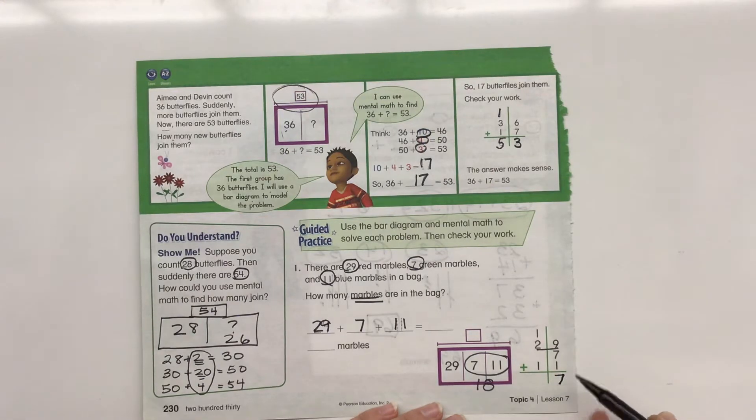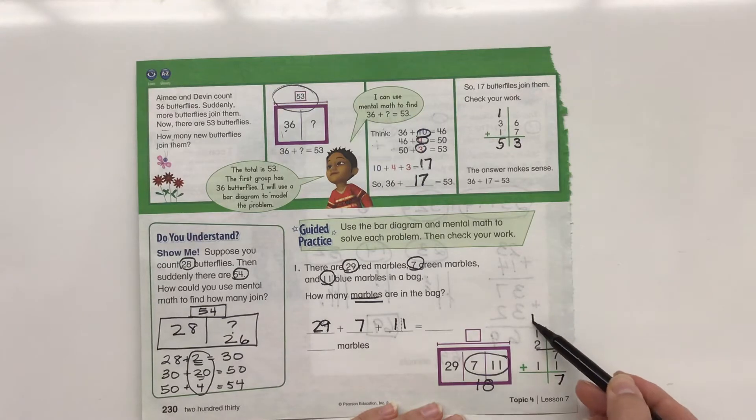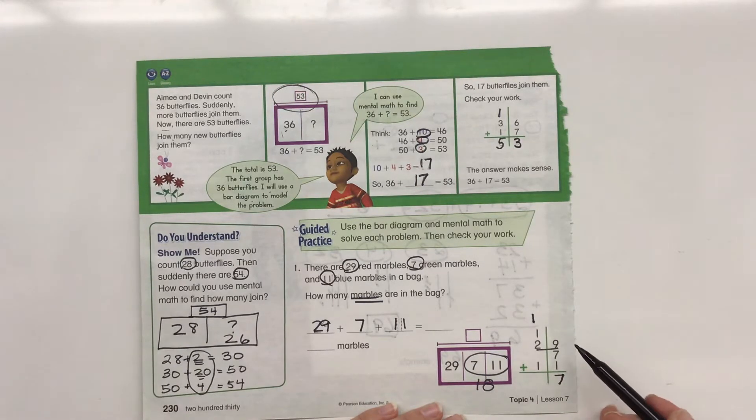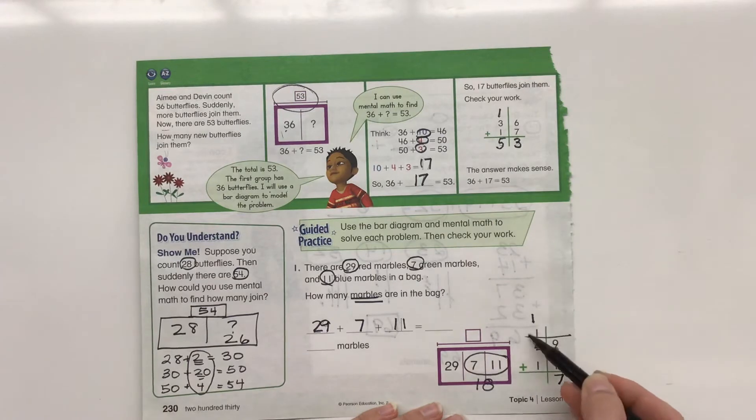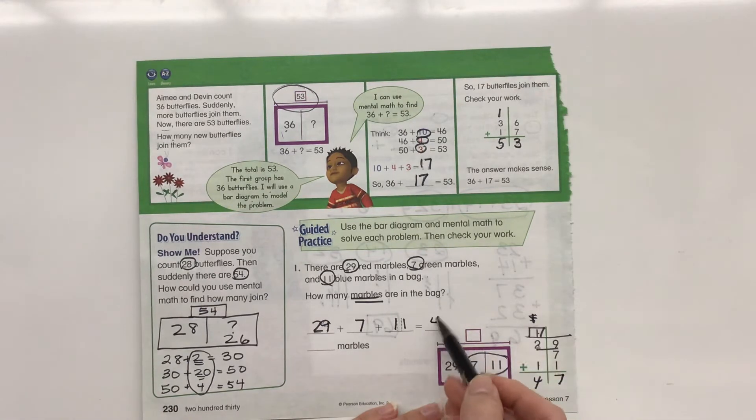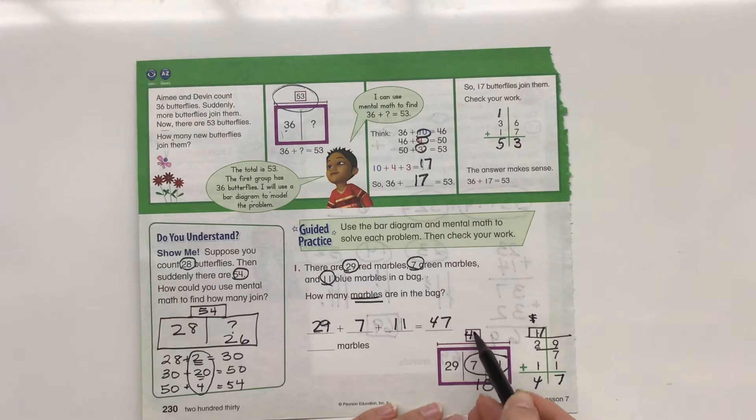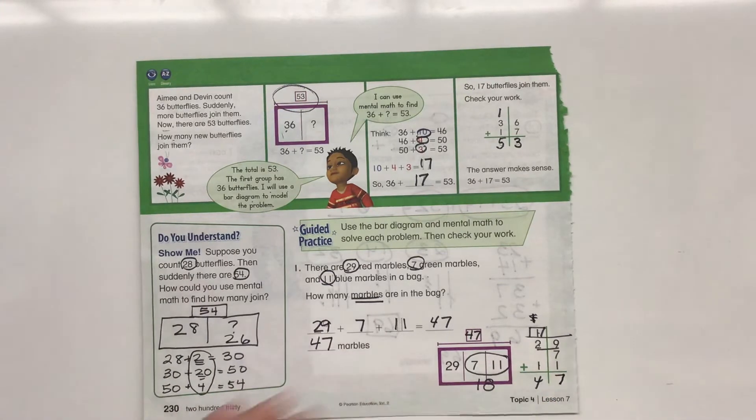And we have to regroup again. It already has our regroup on there. 1 plus 2 is 3 plus 1 more is 4. So we have a total of 47. We're going to put 47 there, 47 there, and 47 there.